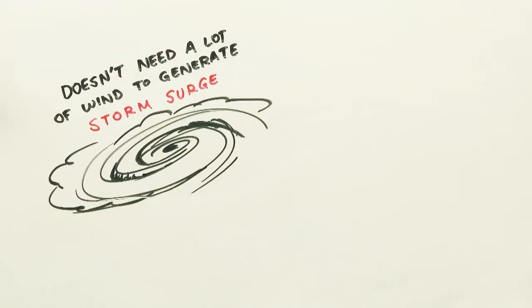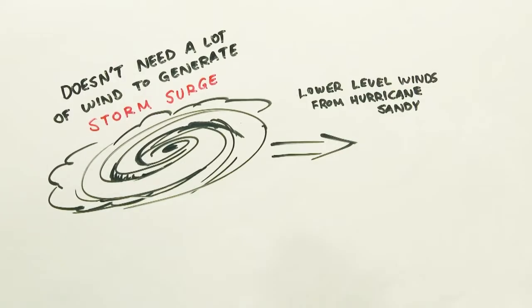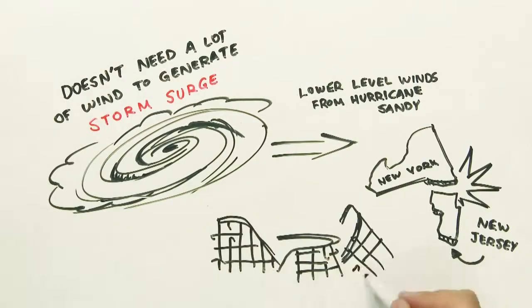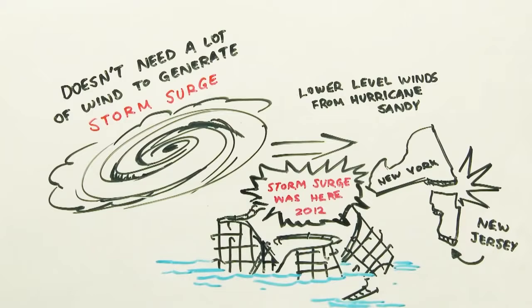It doesn't take extreme wind to make storm surge happen. Low-end hurricane winds from Sandy created a storm surge that leveled parts of New York and New Jersey in 2012.